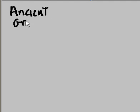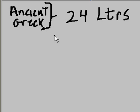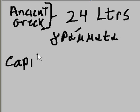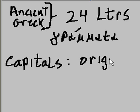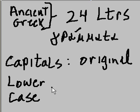Ancient Greek has 24 letters — I'll abbreviate there — and they called those letters grammata. They had capitals, and the capitals were the original characters. Lowercase letters were developed, and they were used in printed text.